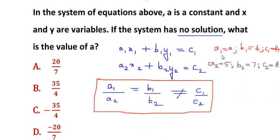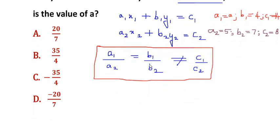Let us substitute the values in this condition. In place of a1 we have a, in place of a2 we have 5, equals b1 which is 4, and b2 which is 7. No need to take c1 over c2 because we can see that c1 over c2 is not equal to this proportion. So we are just going to discard this part and solve for this expression.